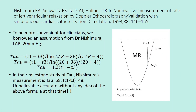To be more convenient for clinicians, we borrowed an assumption from Dr. Nishimura: LAP equals 20 mmHg. After substituting this assumption into the equation, we get a more pragmatic result: TAU = (T1 − T3) / ln((20 + 36) / (20 + 4)), which simplifies to TAU = 1.2 × (T1 − T3).